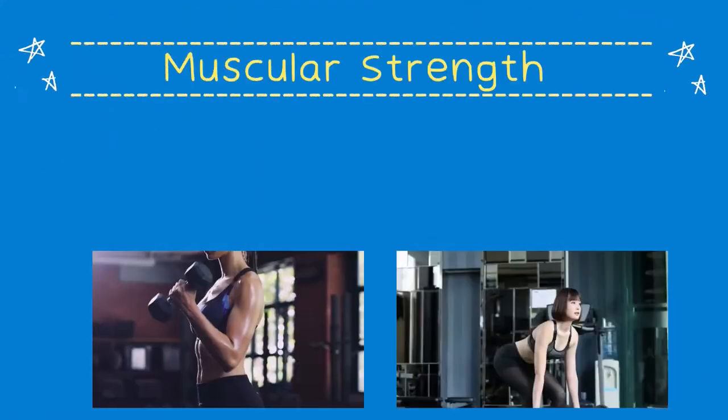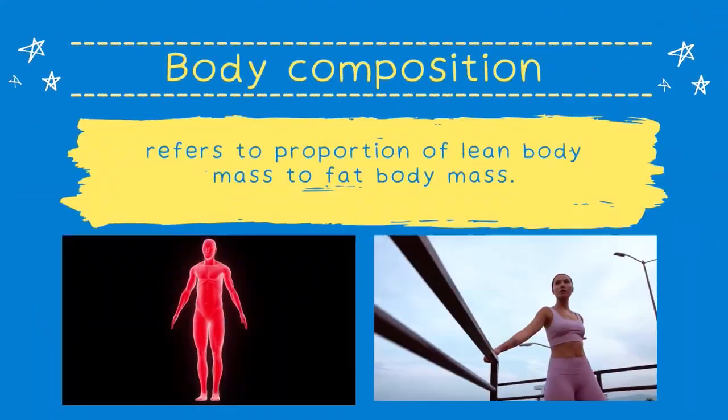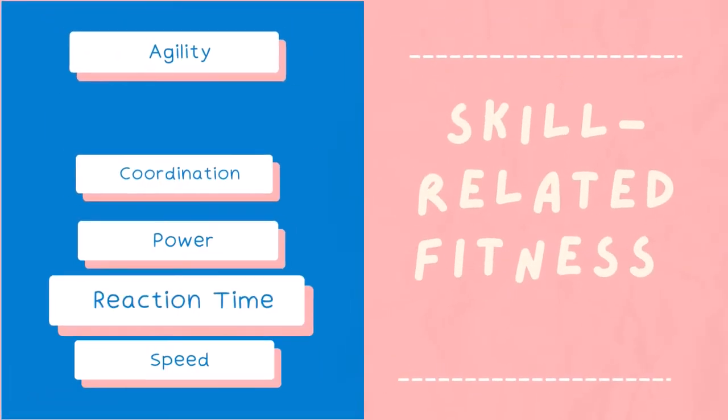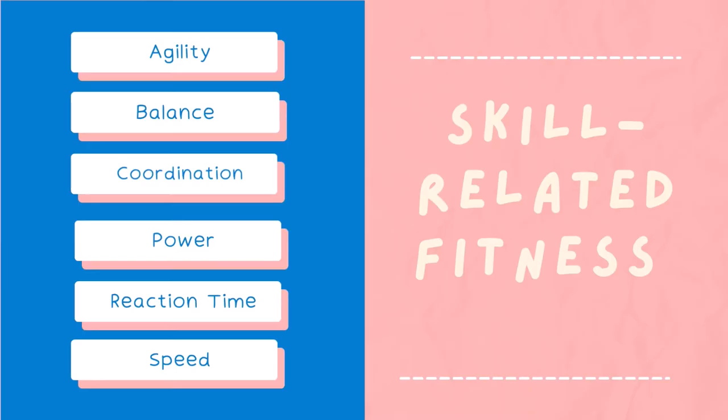Now we proceed to skill-related fitness. There are six sub-components of skill-related fitness: agility, balance, coordination, power, reaction time, and speed.